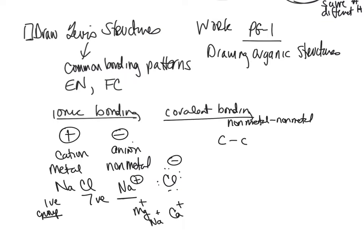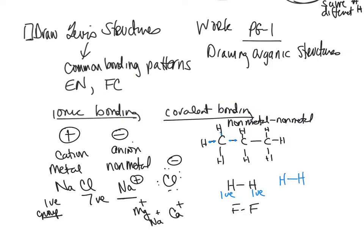If you have propane gas — like what you use for barbecue — this involves sharing electrons. You can look at hydrogen or fluorine. This line represents two electrons, and it represents the sharing of electrons. Hydrogen is in group one and has one valence electron. The other hydrogen also has one valence electron. To make a complete octet, they can both share their electrons. A complete octet for hydrogen is two electrons.